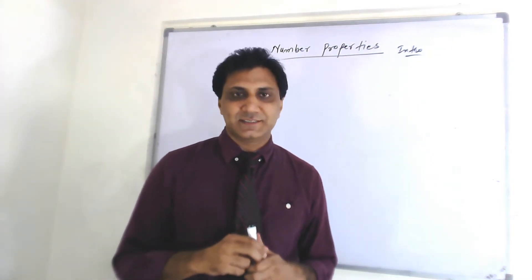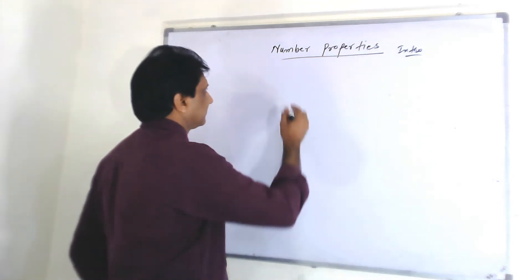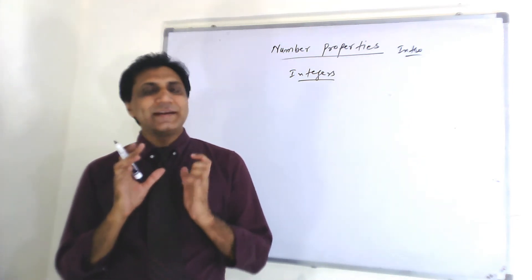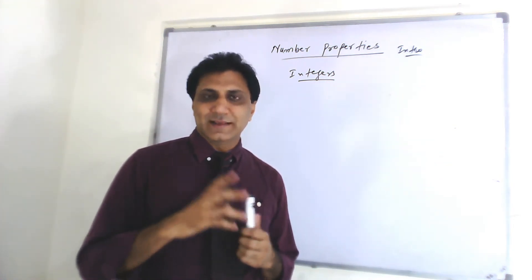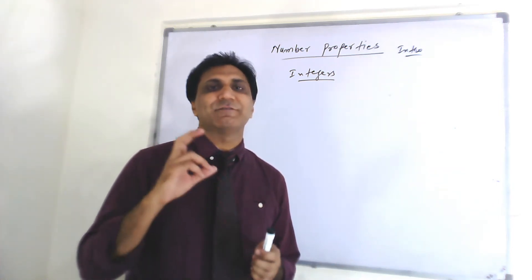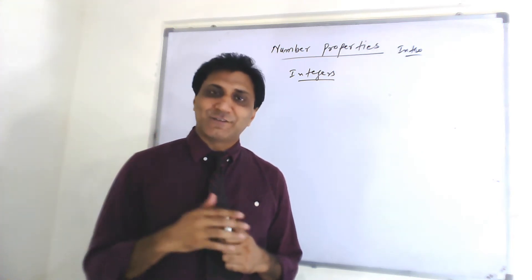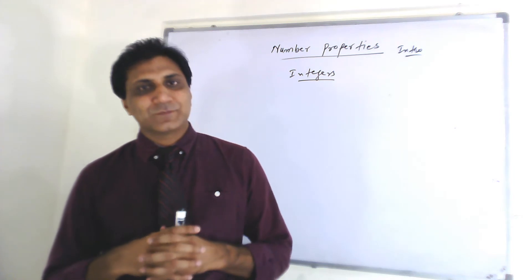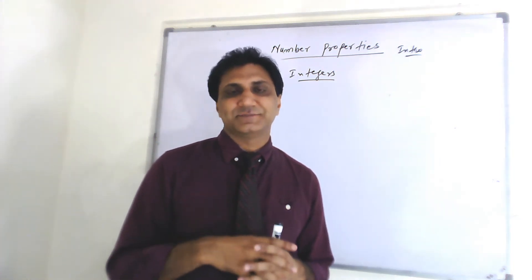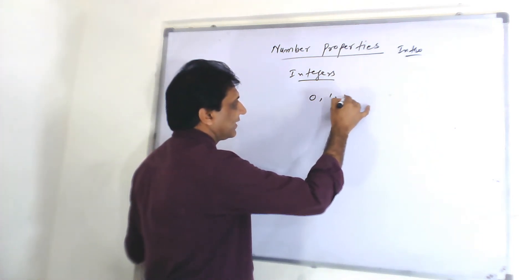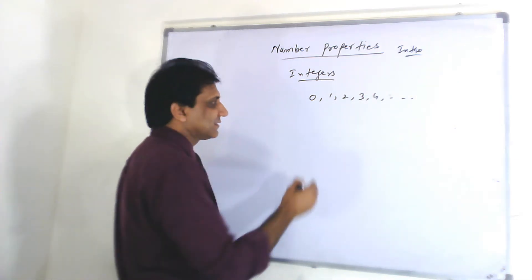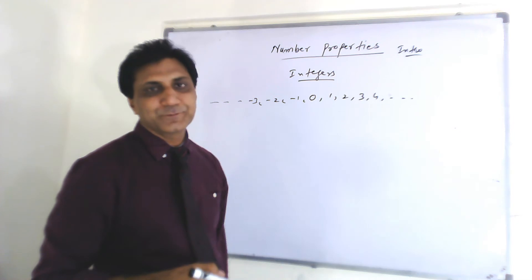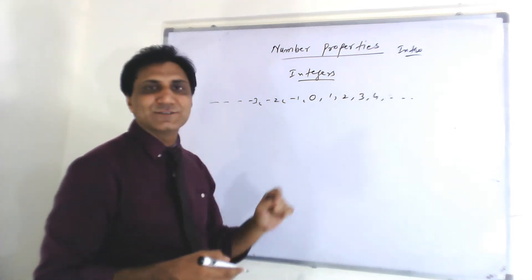Hello, number properties or integer properties. First thing first, what are integers? Integers are complete numbers, whole numbers — one, two, three, four. There can be four students in a class, there can be five students, but there cannot be four point five. So an integer cannot be a fraction, it cannot be a decimal number. It's a whole number. It can be positive, it can be negative. For example: zero, one, two, three, four, negative one, negative two, negative three, and so on. This is called a number line.